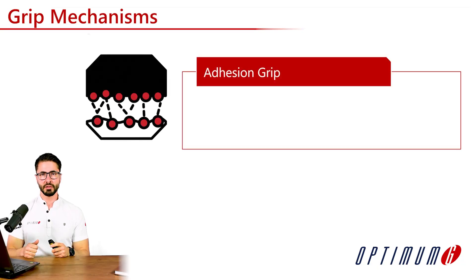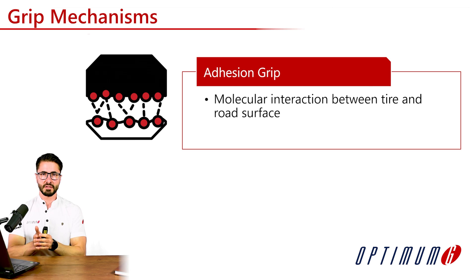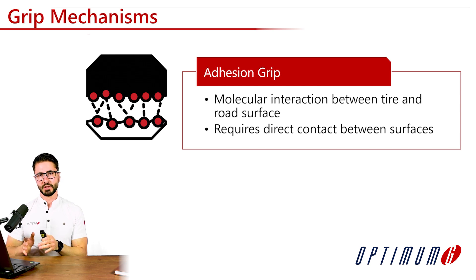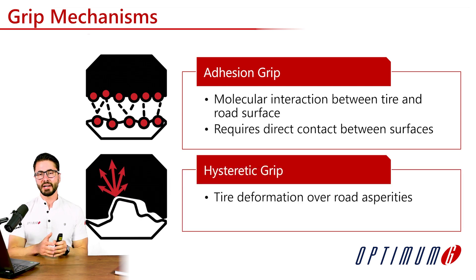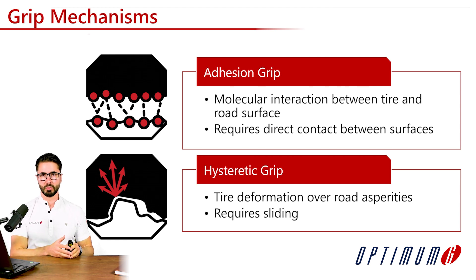Here we'll discuss the two main grip mechanisms. The first one being adhesion. In this case, it's a molecular interaction between the tire and the road surface, and for that we need direct contact between these surfaces. The second mechanism we'll study is the hysteretic grip. The tire is deforming over the road asperities and it will generate forces as well. For that we require sliding.